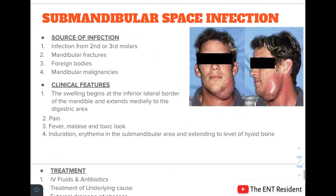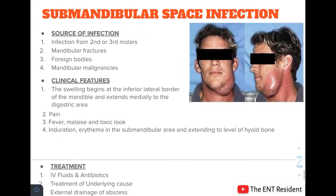Submandibular space infection typically arises from the second or third molar. Other causes include mandibular fractures, foreign bodies, and mandibular malignancies. The patient presents with swelling beginning at the inferior lateral border of the mandible extending medially to the digastric area, along with pain, fever, malaise, toxic appearance, induration, and erythema in the submandibular area extending to the level of the hyoid bone.